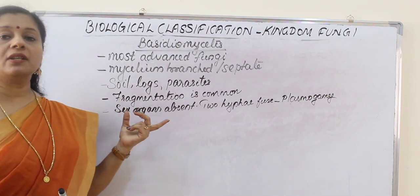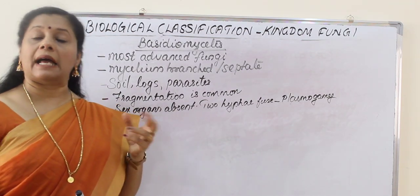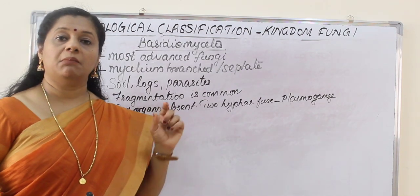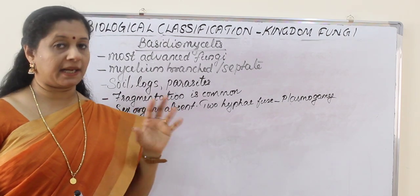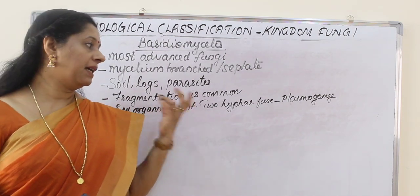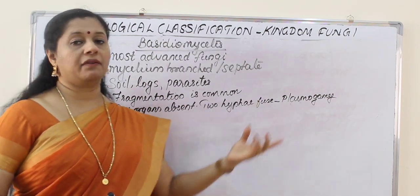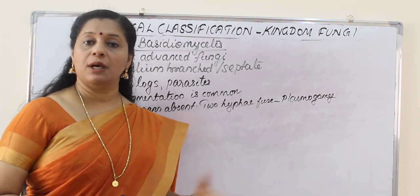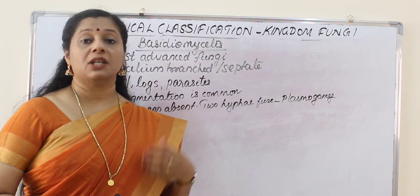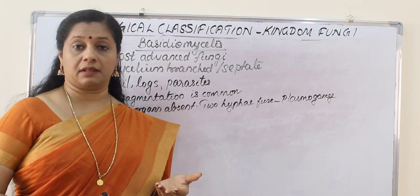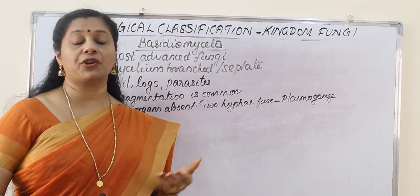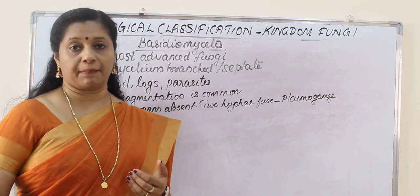Sex organs are also absent in Basidiomycetes, but two hyphae of plus and minus strains — that is, compatible mating types — come together and fuse, leading to plasmogamy. Let us see how sexual reproduction is happening.